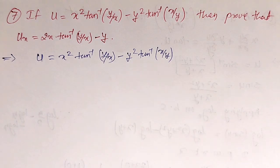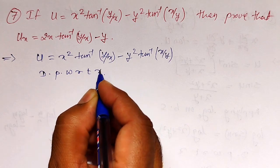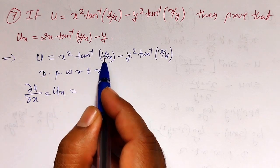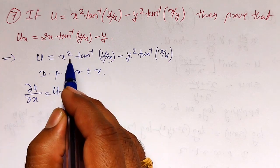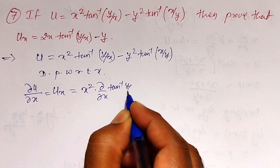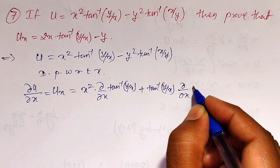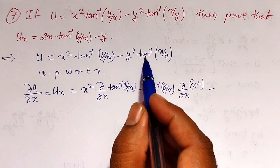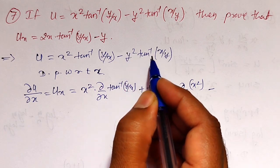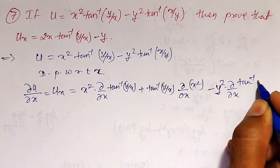This I have to differentiate partially with respect to x. Differentiating partially with respect to x: du/dx, or simply u_x, equals — for the first term, x square into tan inverse of y by x, both are functions of x, therefore apply the product rule. That is x square into d/dx of tan inverse of y by x, plus tan inverse of y by x into d/dx of x square. For the second term, y square into tan inverse of x by y — since we are differentiating with respect to x, y square will be treated as a constant, so no need to apply product rule for the second term. Write y square as it is into d/dx of tan inverse of x by y.